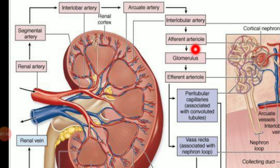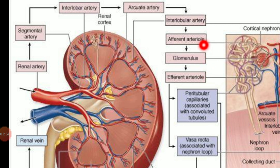The afferent arteriole is now dividing into the glomerulus — that is the tuft of capillaries — and from this glomerulus the blood will be filtrated. Not all blood is filtrated because plasma protein and blood cells cannot be filtrated under normal conditions. The unfiltrated blood is now drained into the efferent arteriole. This is a peculiar feature: the arteriole divides into capillaries, and those capillaries drain into another arteriole — the efferent arteriole.